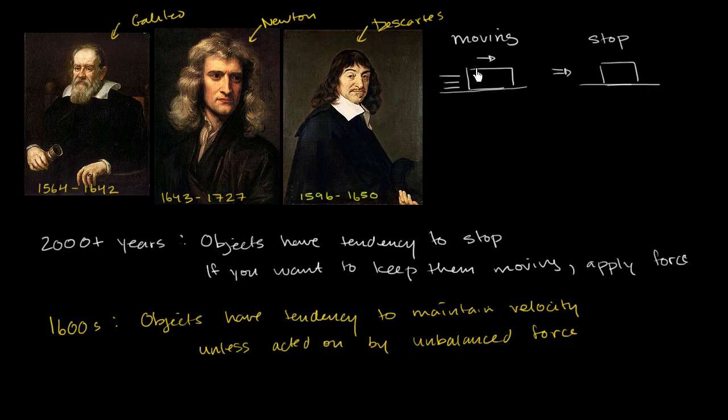And their big insight was, well, maybe these things don't have, by themselves, a tendency to stop, but because of interactions with their environment, forces are being generated that are acting against their motion. So when you think you're just leaving this thing alone, there's actually a net force that is trying to stop it. In this particular example, the net force is the force of friction - the interaction between the block and the ground. When you think you're leaving this thing alone, you actually have a net force going against its motion, which is the force of friction.